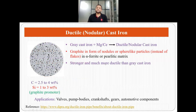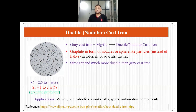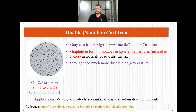If we take this gray cast iron and add magnesium or cerium to it, it will be converted to ductile or nodular cast iron. The graphite, which was initially in the form of flakes, will be converted to nodules or sphere-like particles in the same alpha ferrite or pearlite matrix. The microstructure shows graphite nodules in an alpha ferrite or pearlite matrix.